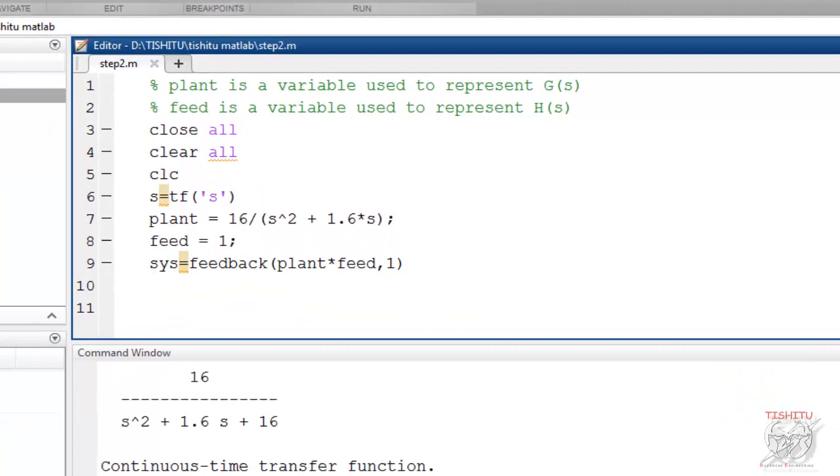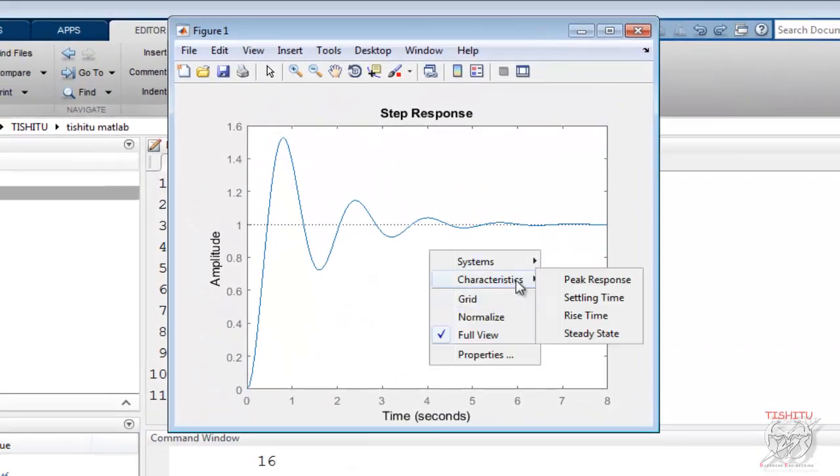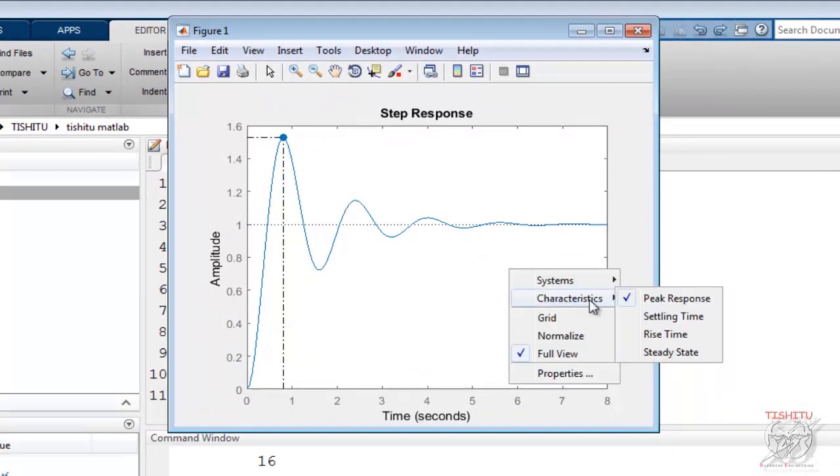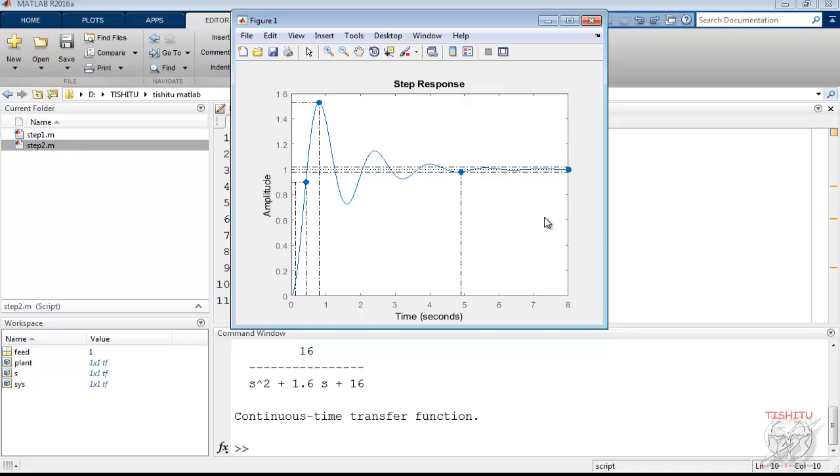That is transfer function of the system as same as we obtained in the last class also. Now use step command to evaluate step response of the system like this. Then just right click on a graph you have an option of measuring parameter and you compare the value of these parameter from previous class and you observe that all values remain same. So in this way these are two methods as we discussed.